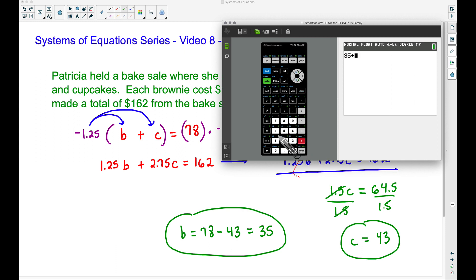Looking at this first equation, we got brownies plus cupcakes equals 78. The brownies was 35, there's 35 brownies in all, and the 43 cupcakes for a total of 78 baked goods. We know the brownies cost $1.25.